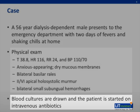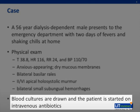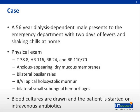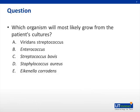Blood cultures are drawn and the patient is started on IV antibiotics. Which organism will most likely grow from the patient's cultures? A. Viridans streptococcus. B. Enterococcus. C. Strep bovis. D. Staph aureus. E. Eikenella.